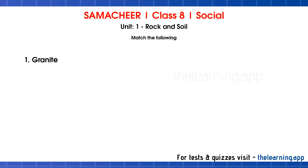Next, match the following. First question: What is granite? Granite is a plutonic rock, which is an intrusive type of igneous rock. There are two types of igneous rocks: extrusive and intrusive. The intrusive type, which forms below the surface, is plutonic rocks, for example granite.